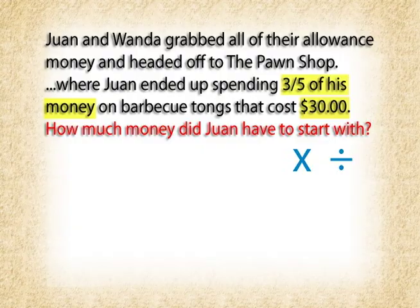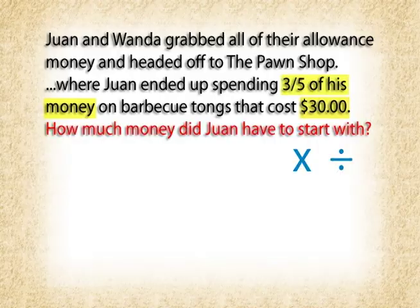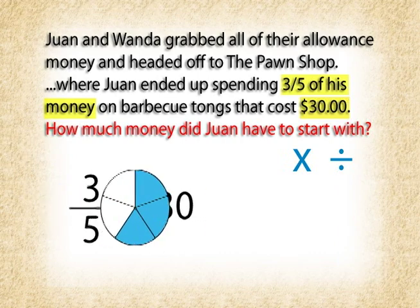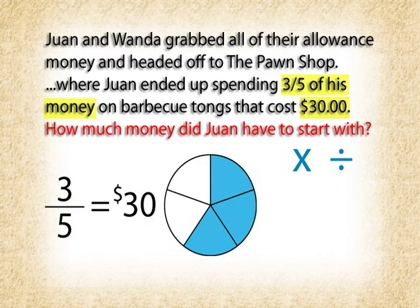Let's see if we can solve this problem by thinking about it logically. So we need to find out how much money Juan had at the beginning. We know that the thirty dollars he spent was equal to three-fifths of all of his money. Well, if three-fifths is part of his money, how many fifths do you need to equal all of his money?